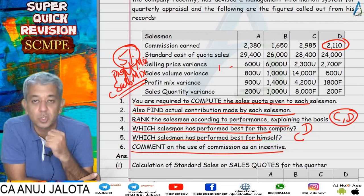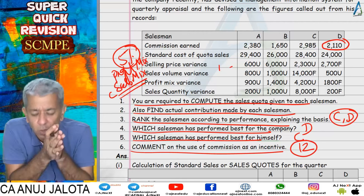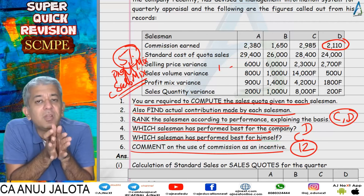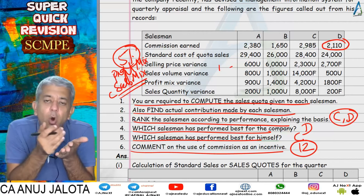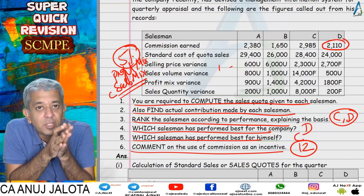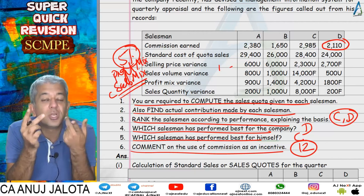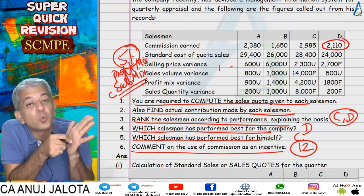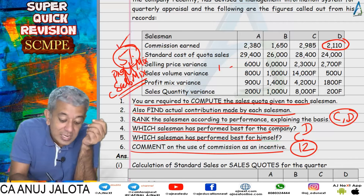This is against the principle of goal congruence — what employees want (more commission) does not match what the company wants (higher profit). Our recommendation, which could be asked for up to 12 marks separately: introduce a differential commission system where products with higher profit fetch the salesman a higher rate of commission. Automatically, salesmen will prioritize selling those products, aligning their incentives with the company's profitability goals.